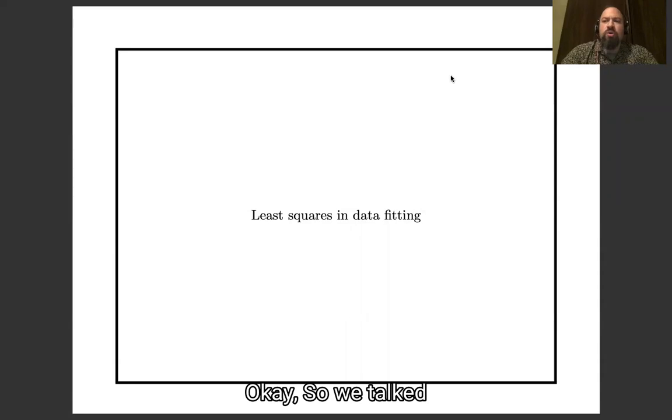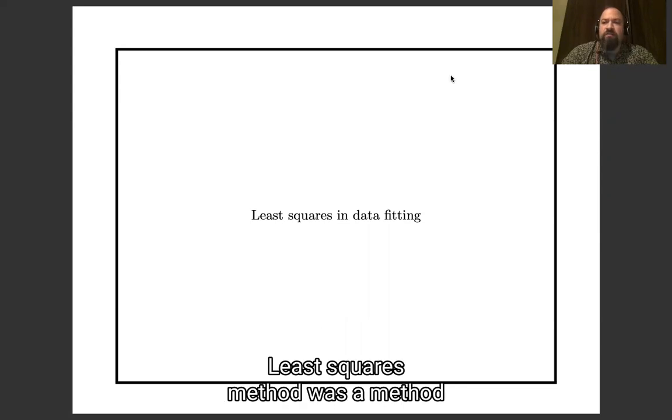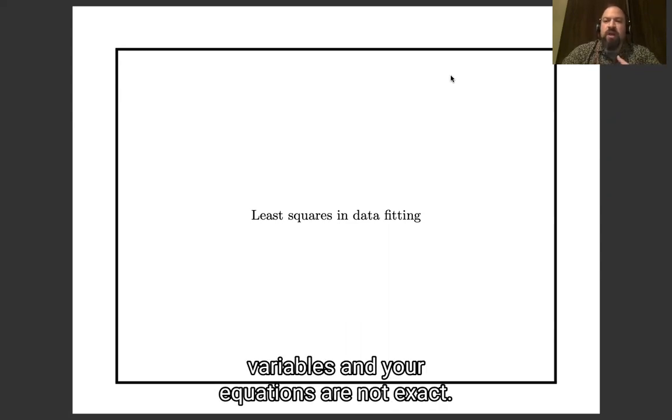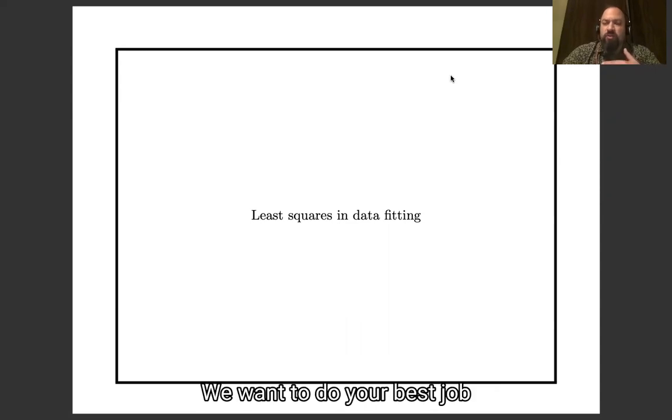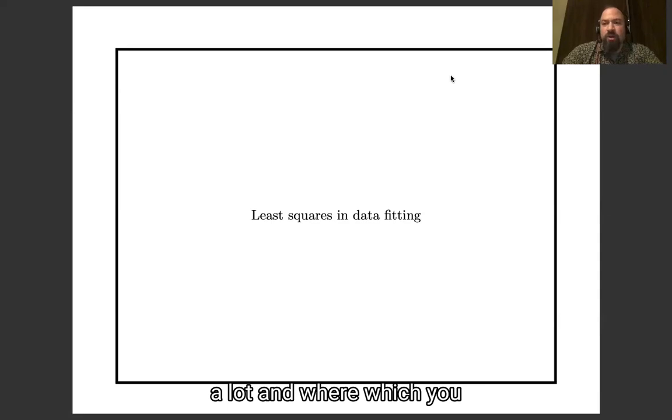Okay, so we talked recently about solving systems by least squares and how the least squares method was a method for where you have lots of equations and a small number of variables, and your equations are not exact. There's some error involved, but you want to do your best job of trying to solve them anyway.